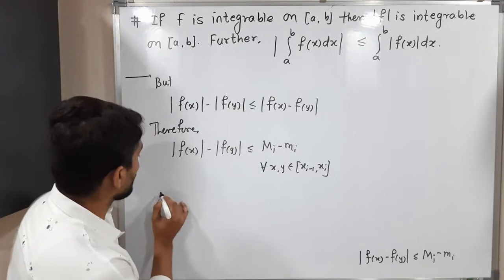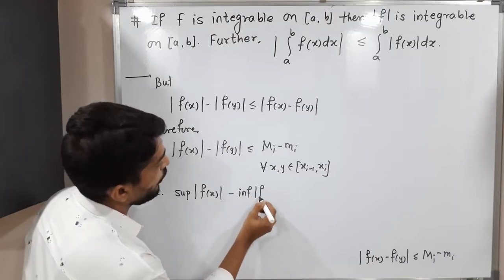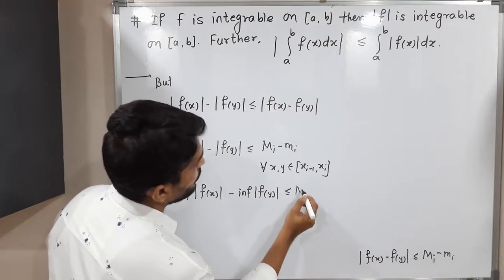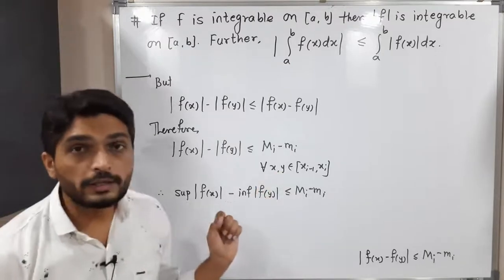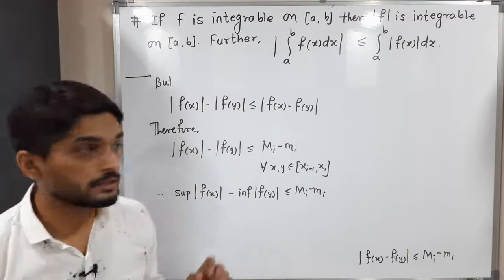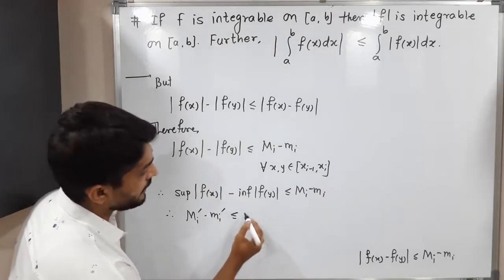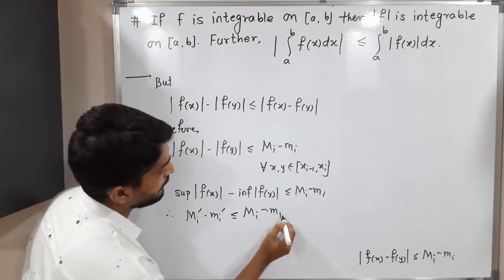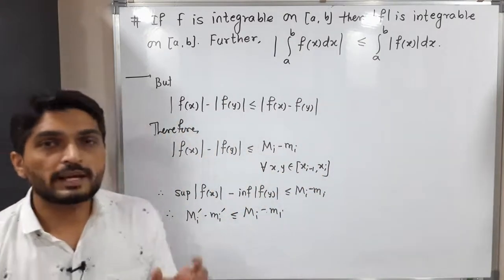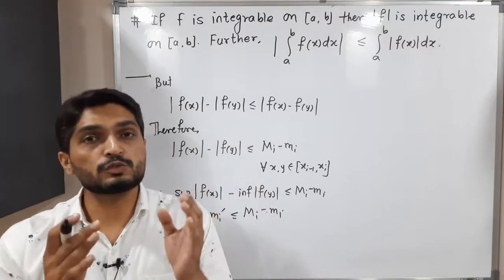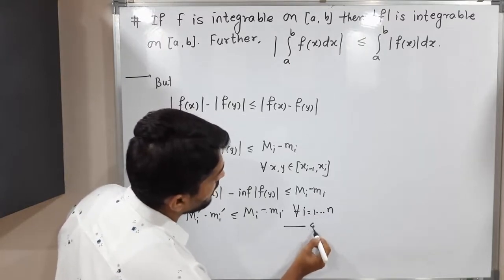Since this holds for all x, y in the sub-interval, if we take the supremum over x and infimum over y and find their difference, it is still less than or equal to Mᵢ − mᵢ. Therefore: sup|f(x)| − inf|f(y)| ≤ Mᵢ − mᵢ, which means Mᵢ' − mᵢ' ≤ Mᵢ − mᵢ. This is true for all i from 1 to n, and we call this inequality (4). This is a very important result.